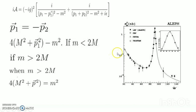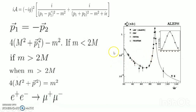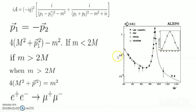For example, this figure shows the cross-section (plotted vertically) for e⁺e⁻ → μ⁺μ⁻ scattering from the ALEPH experiment at CERN. The horizontal axis shows the center-of-mass energy. The curve rises sharply around 91 GeV — the mass of the Z boson.